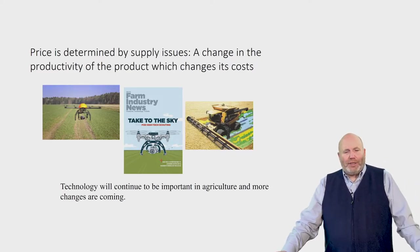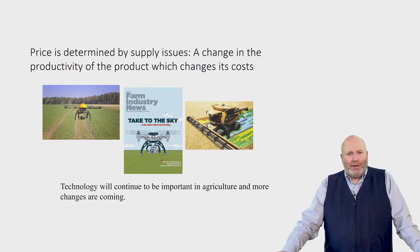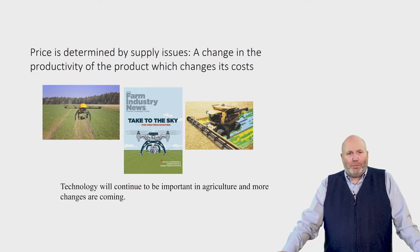Change in productivity — for example, drones and futuristic technologies being explored, robots currently used to milk dairy cows, and bigger combines. As productivity increases and allows the farmer to have a lower cost of production, it's going to shift the supply curve outward.